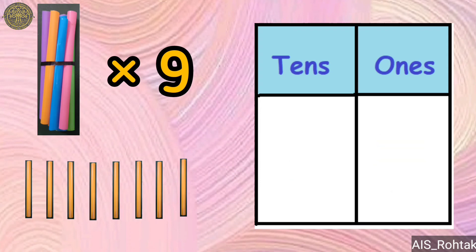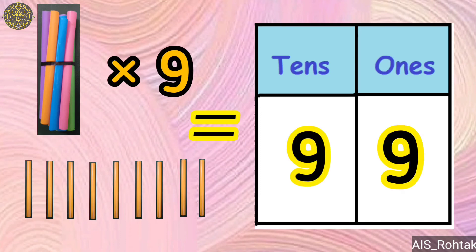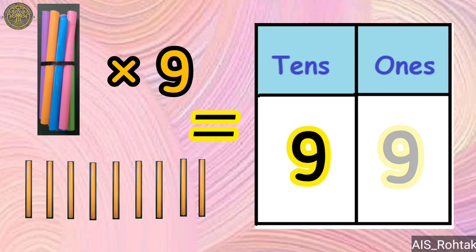Nine bundles and nine loose sticks make the number 99 — nine tens and nine ones.